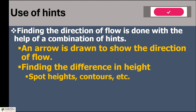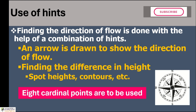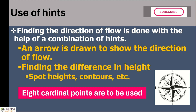By identifying the height difference at two different points, we find out the direction of flow of the river. When writing the direction, we can use eight cardinal points — that means along with north, south, east and west, we should use northwest, northeast, southeast or southwest.